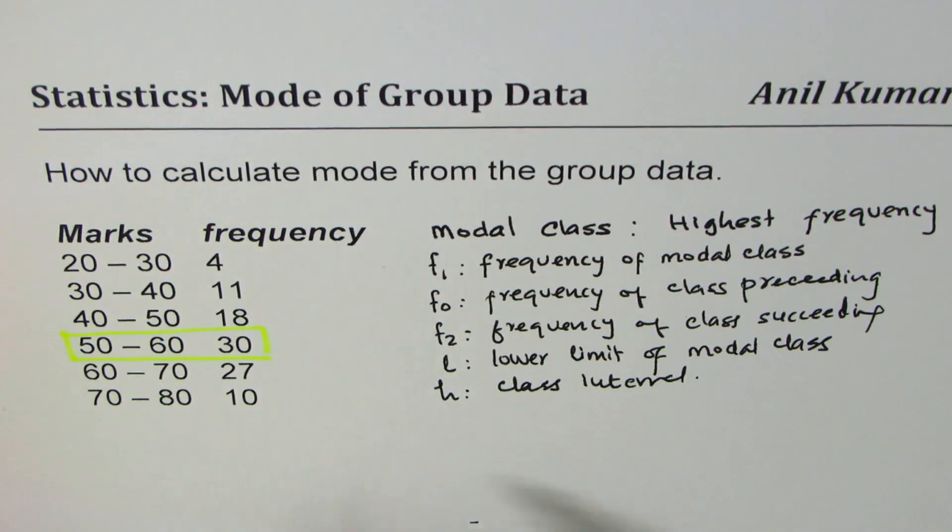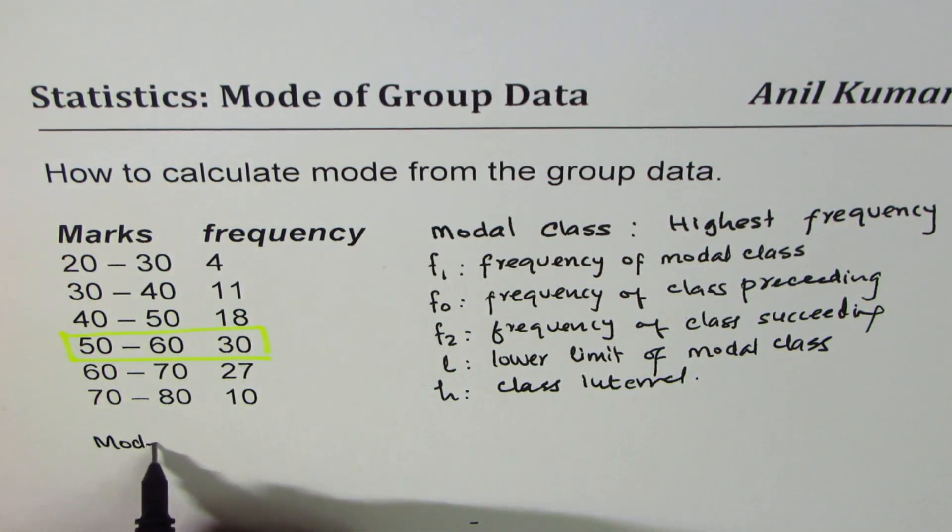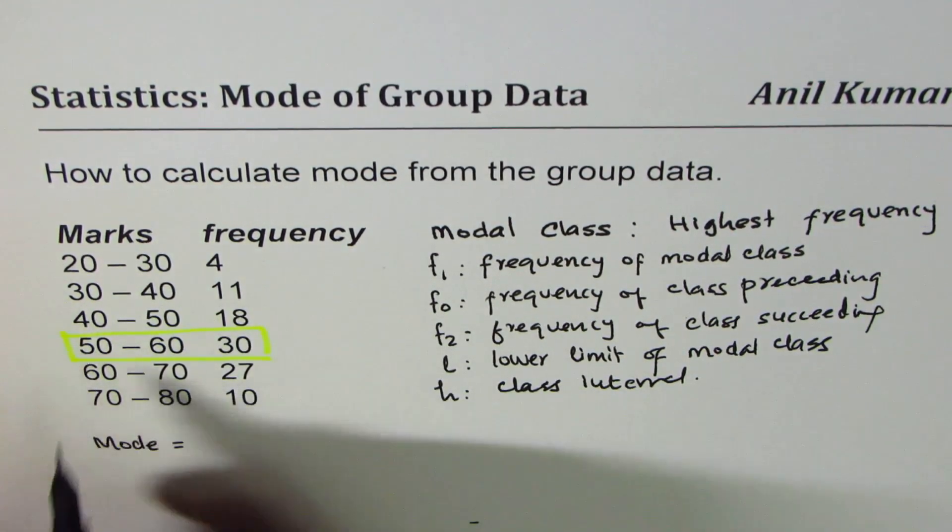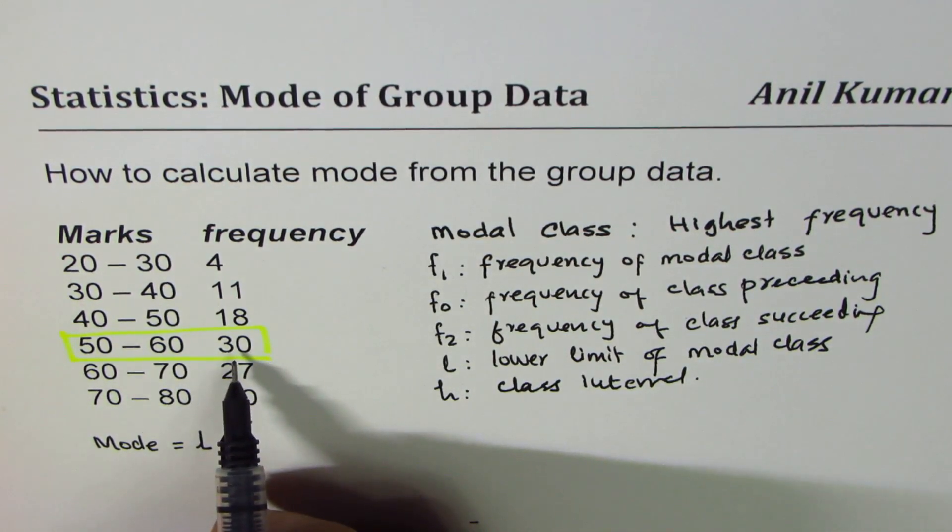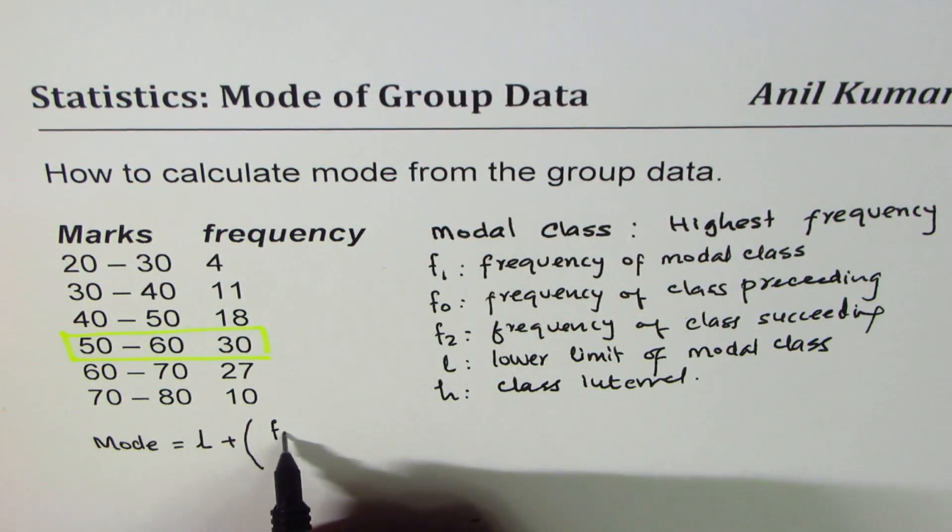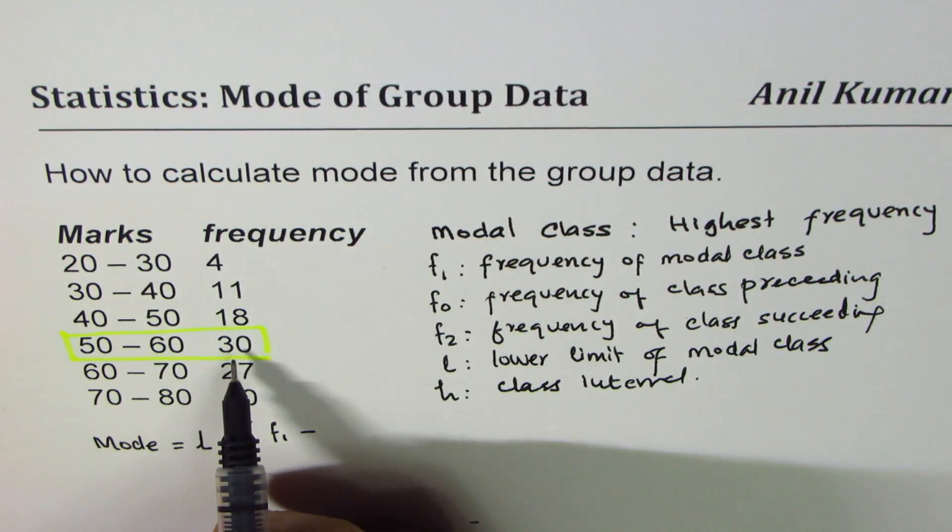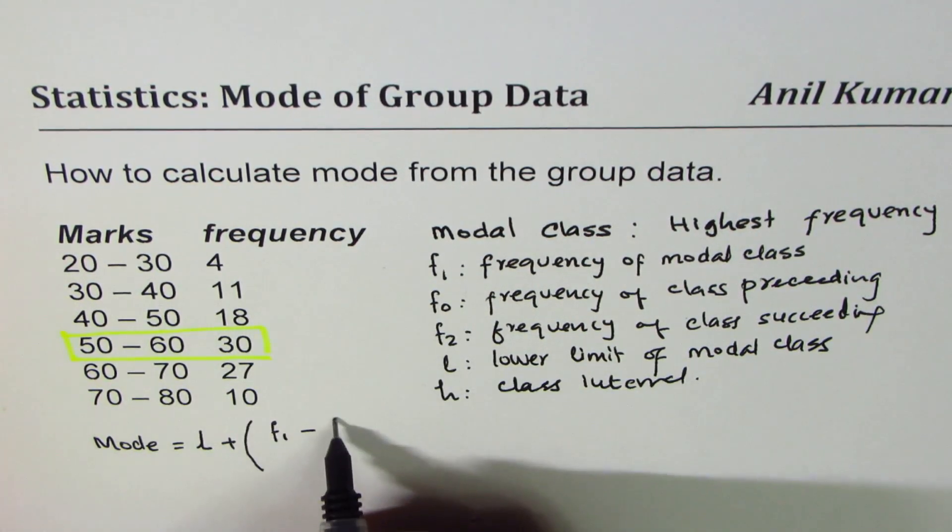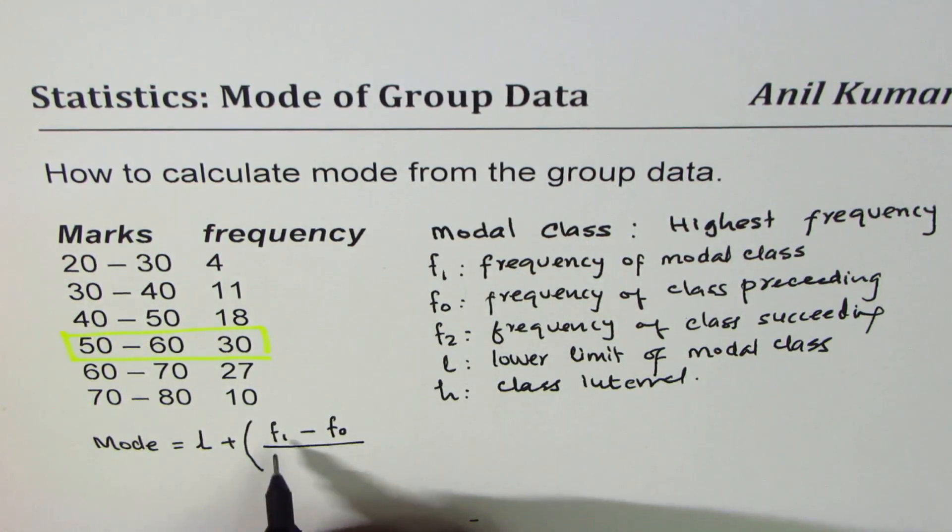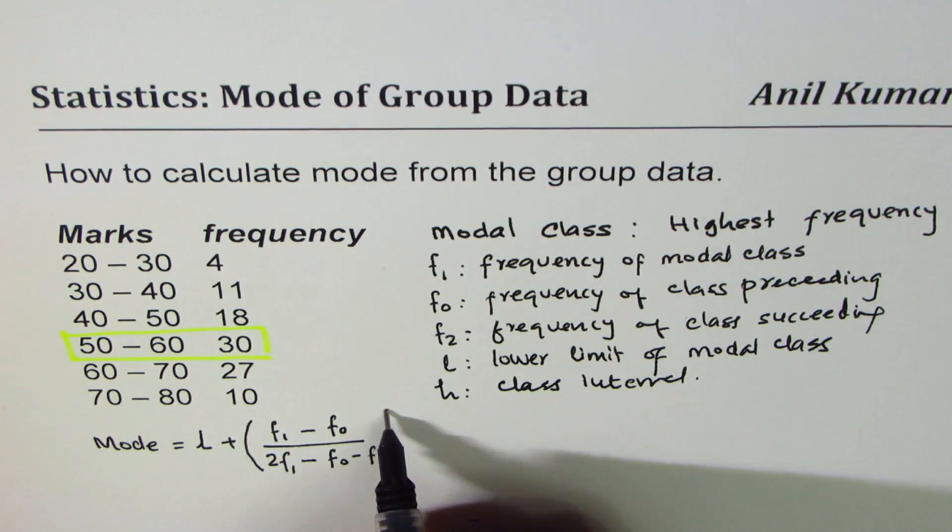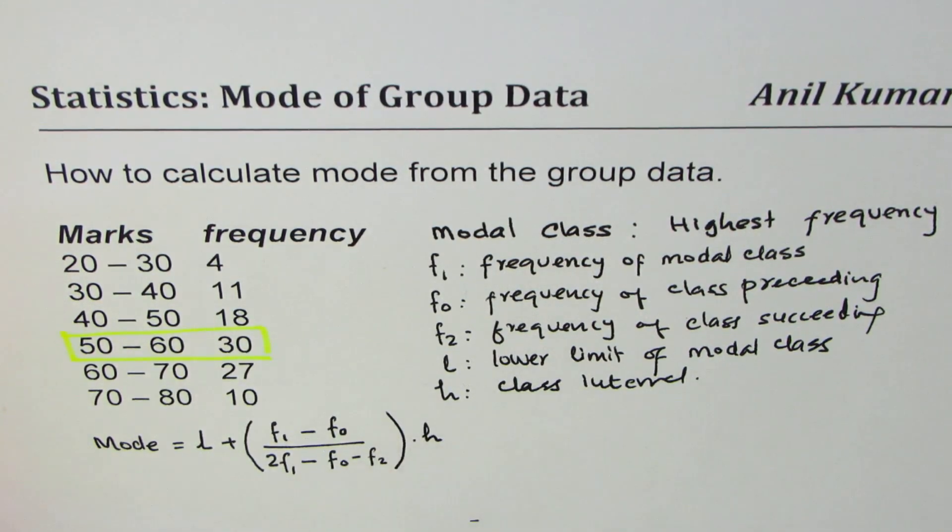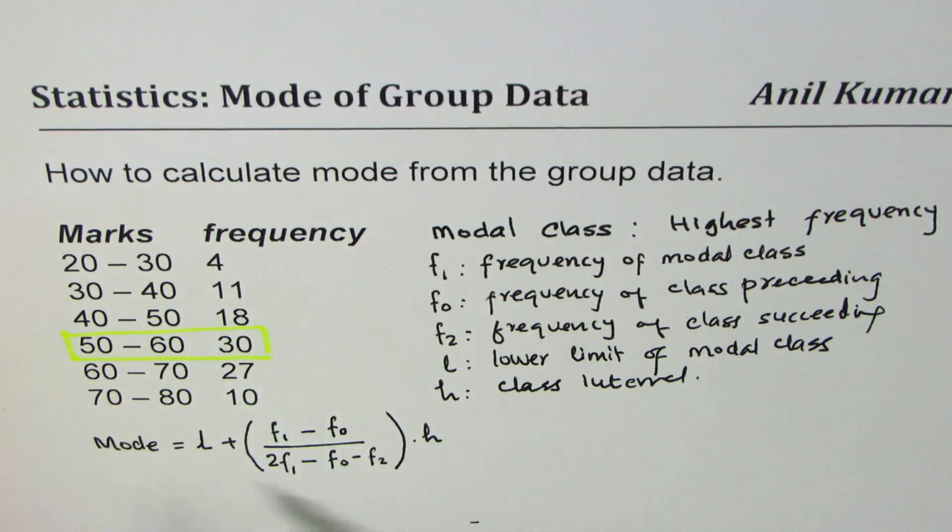Mode is given by the formula: Mode equals L, the lower limit of the modal class, plus (f1 minus f0) divided by (2 times f1 minus f0 minus f2), times H, where f2 is the frequency of succeeding class. So that is the formula which you can use to find or calculate the mode.